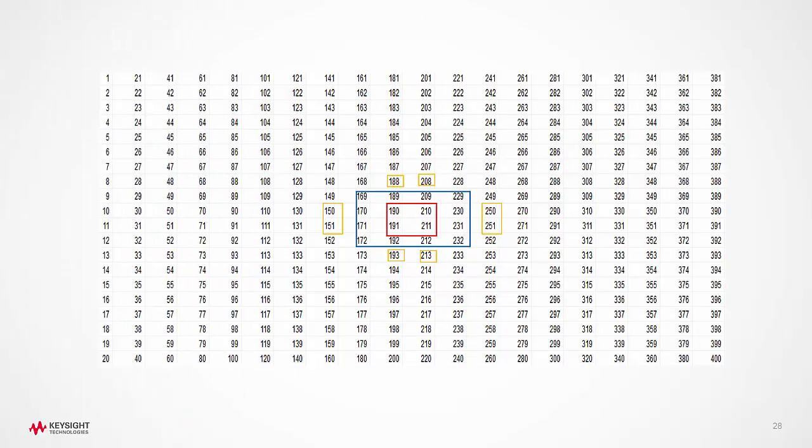As can be seen in the table here, the central elements receive the maximum power. Amplifiers connected to element numbers 190, 210, 191, and 211 are the highest compressed amplifiers. The next level is shown in the blue box and the next level in the yellow box.